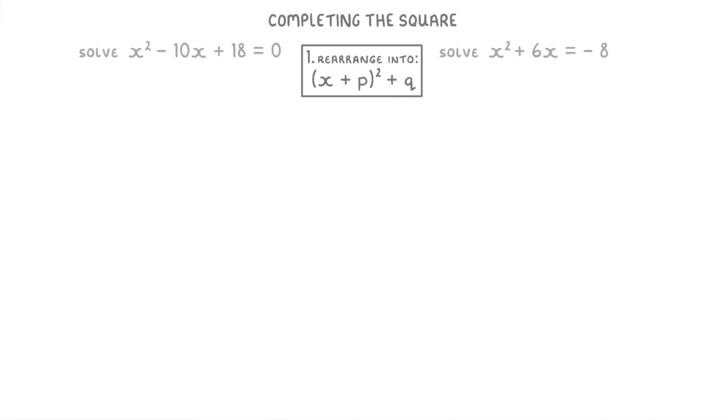We've actually already covered how to do this in our last video though, so in this one we'll assume that we've already rearranged them, which would make our two equations look like this. Once we've got them in this form, we have to rearrange them a bit more to get the x by itself.